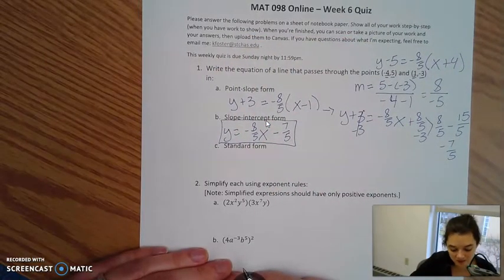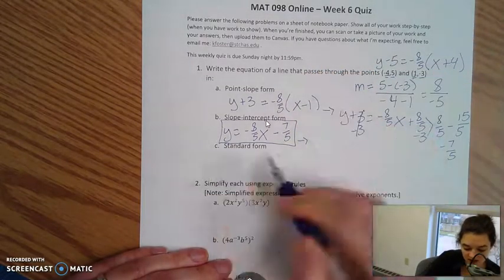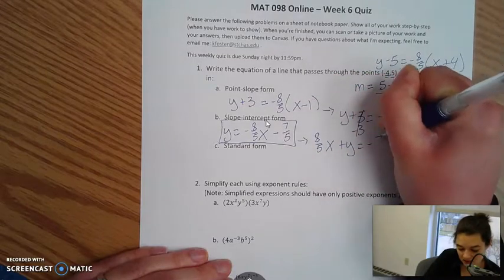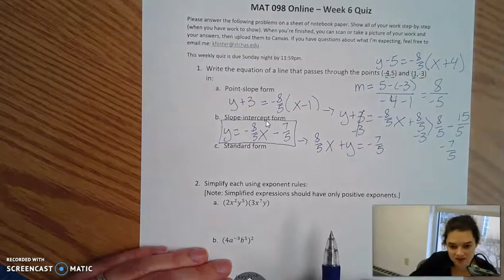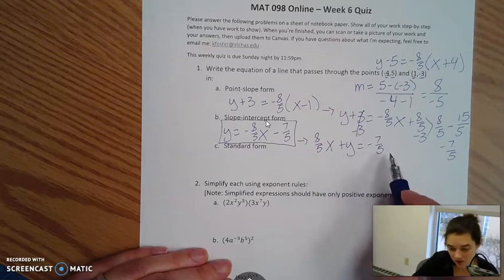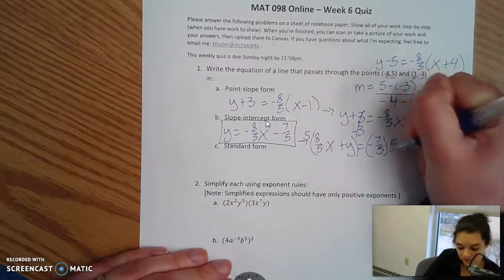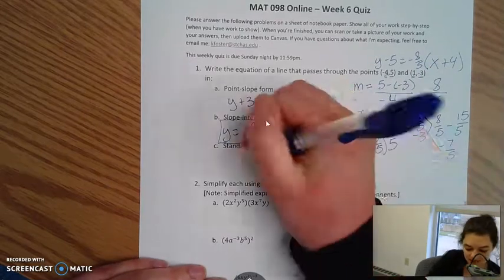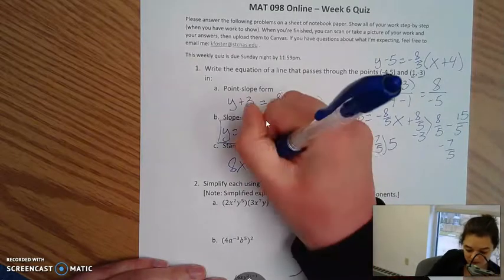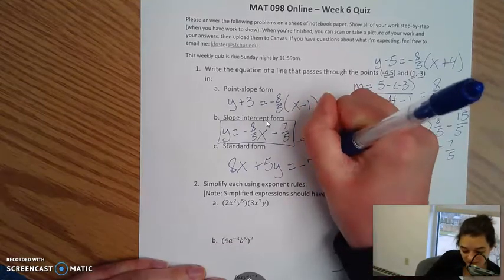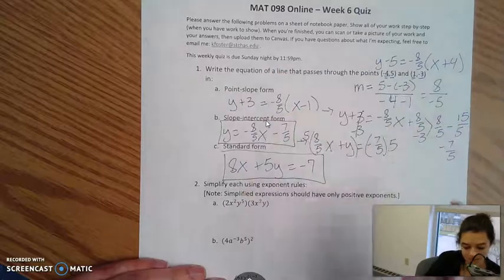To go from slope intercept form to standard form, the first thing I need to do is get x's and y's on the same side. So I'm going to add 8 fifths x to both sides, giving me 8 fifths x plus y equals negative 7 fifths. In standard form, all of our coefficients should be integers. So to get everything as an integer, I'm going to multiply both sides by 5, the least common denominator. 5 times 8 fifths x is just 8x, 5 times y is plus 5y, and negative 7 fifths times 5 is negative 7. So 8x plus 5y equals negative 7 — that's our standard form.